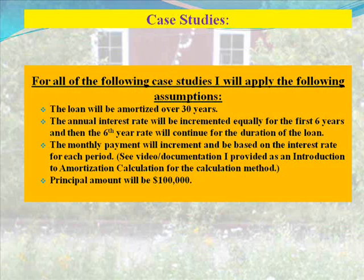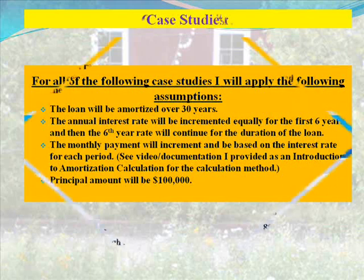For all of the following case studies, I will apply the following assumptions. The loan will be amortized over 30 years. The annual interest rate will be incremented equally for the first 6 years, and then the 6th year rate will continue for the duration of the loan. The monthly payment will increment and be based on the interest rate for each period. The principal amount will be $100,000.